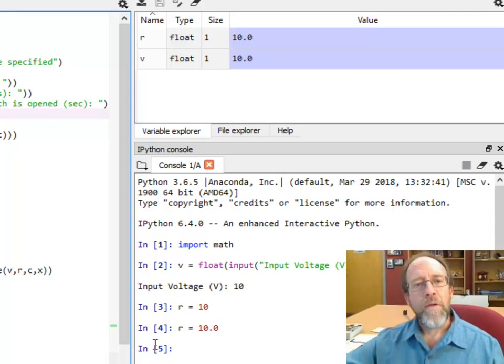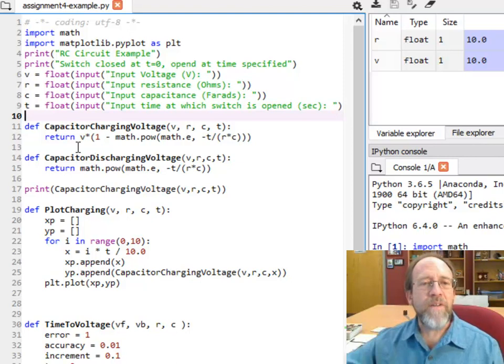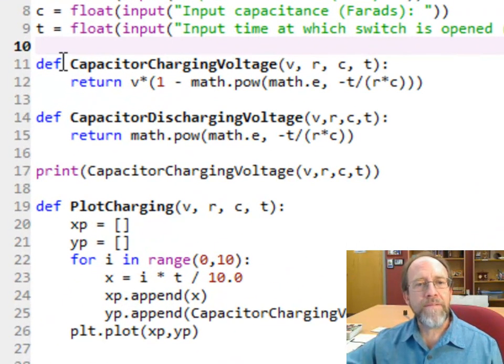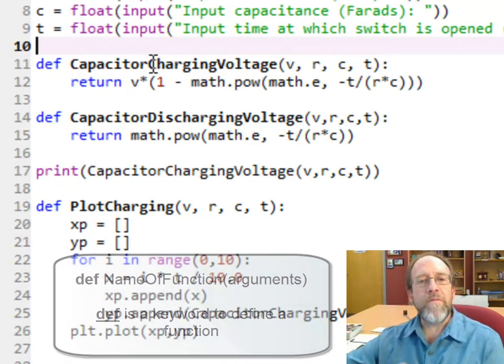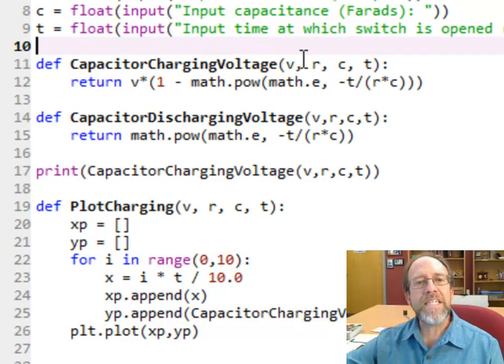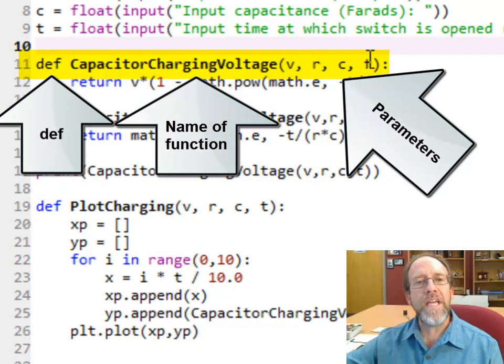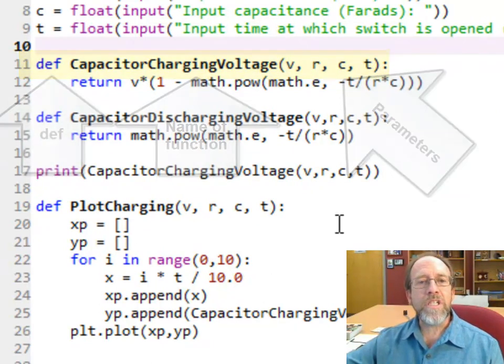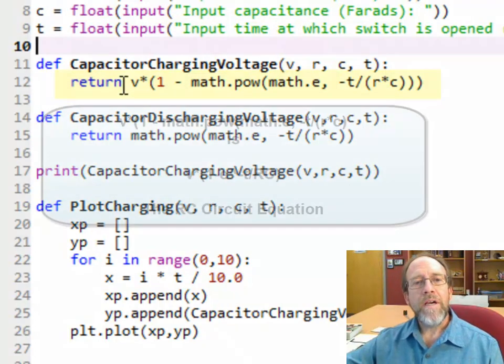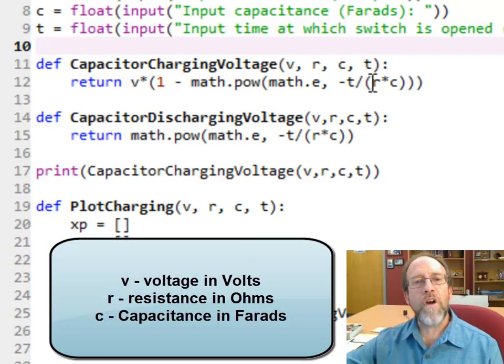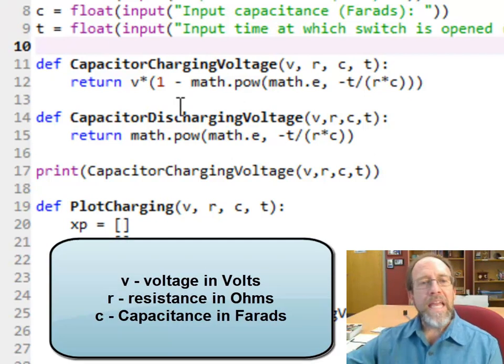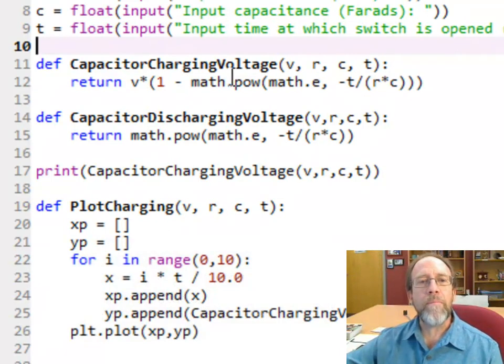Let's first look at creating this function that encodes the equation. To create a function, I go over here and put in the word def, and the function has to have a name. I'm going to call it CapacitorChargingVoltage - in other words, it's going to be the voltage returned from that equation. Then I'm going to pass it the parameters to use in the equation: V, R, C, and T.